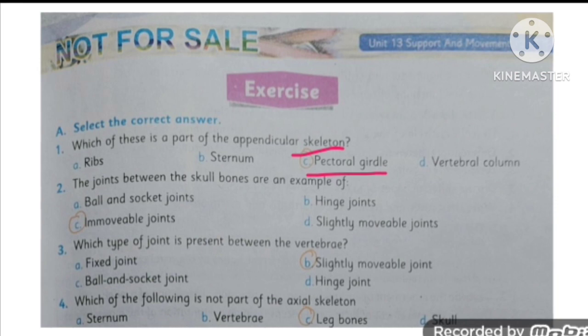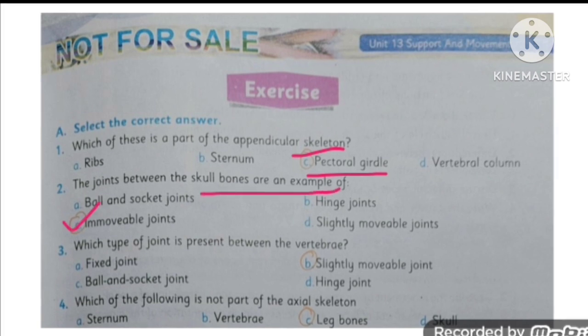MCQ number two is: the joints between the skull bones are an example of immovable joints. The type of joint present between the vertebrae are slightly movable joints, basically fibrous joints.